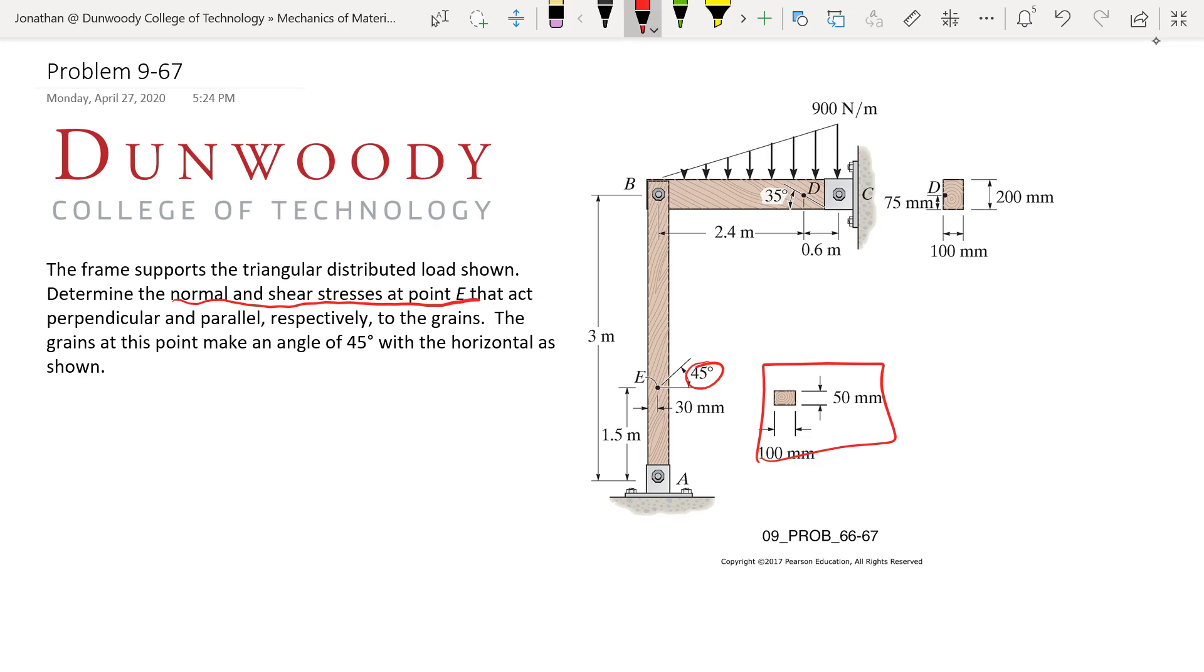So what do we need to do? Step one: find internal loads at E. And then step two, we'll use those, draw, we'll use Mohr's circle here. We can quickly draw all these things. We'll practice Mohr's circle with this problem. And from there we'll get sigma x prime and tau x prime y prime at E.